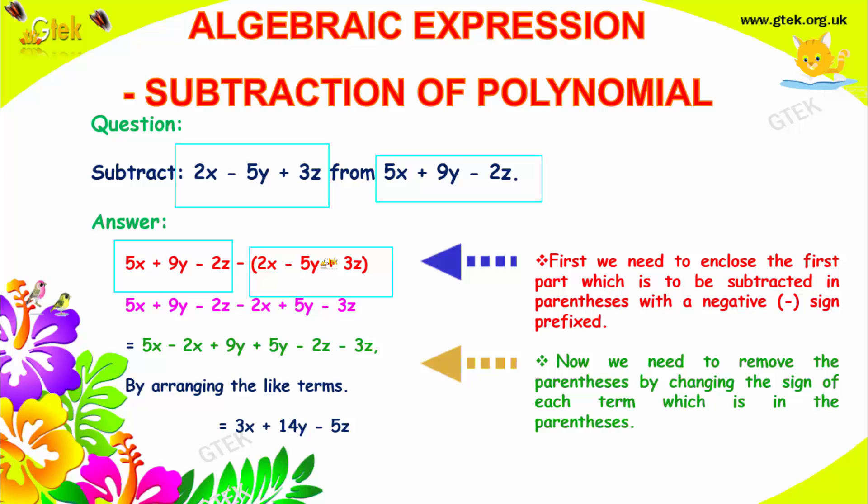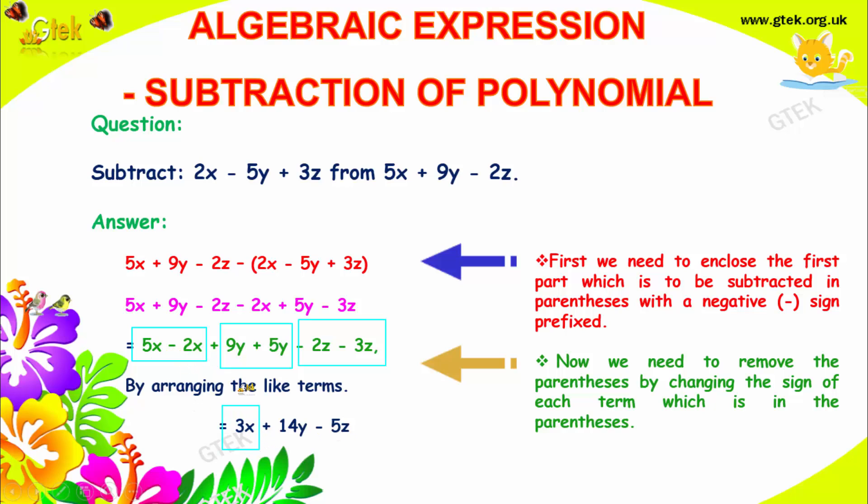Minus 2x, it will become minus 2x. Minus into minus, it will become plus 5y. Minus into plus, it will become minus 3z. After separating, now you need to arrange it as x in one term, y and y in another term, z and z in another term. So 5x minus 2x is 3x. 9 plus 5 is 14y. Minus 2z minus 3z, it will become minus 5z. That's the answer.